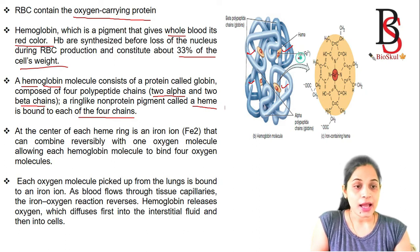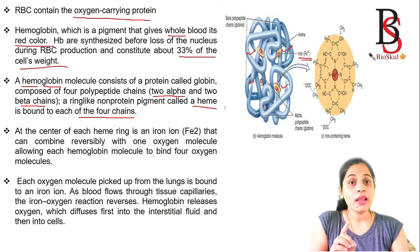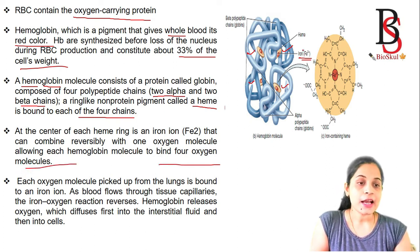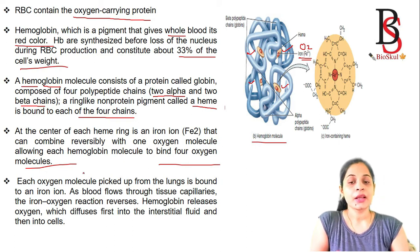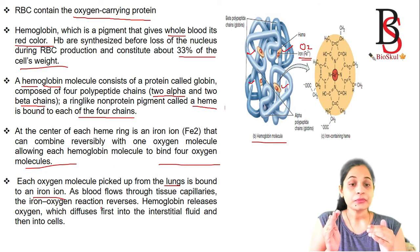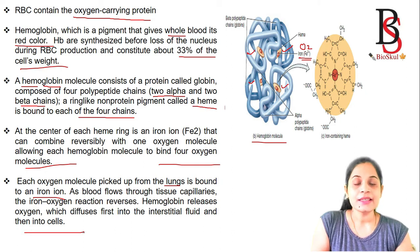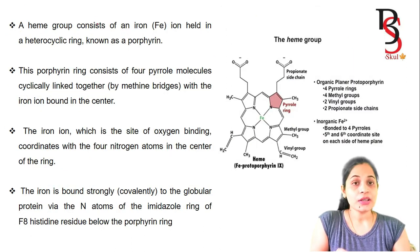At the center of each heme ring there is an iron atom, and that iron combines with one oxygen molecule, allowing a hemoglobin molecule to bind with four oxygen molecules total. Each oxygen molecule picked up from the lungs is bound to an iron atom. As blood flows through the capillaries, the iron-oxygen reaction reverses and hemoglobin releases the oxygen, which diffuses into the cells.